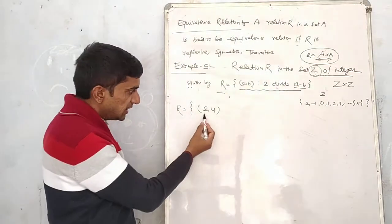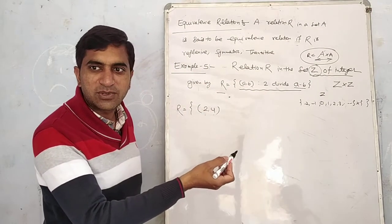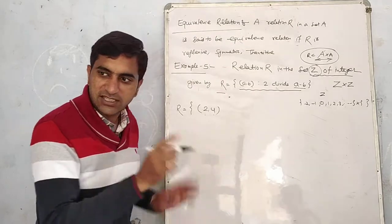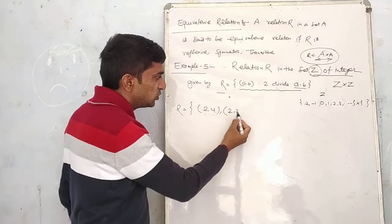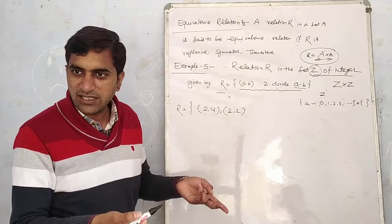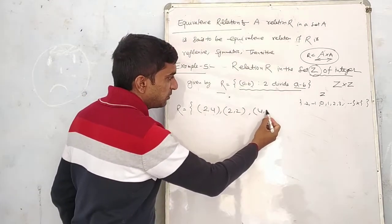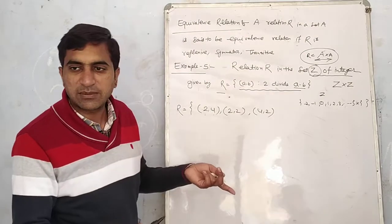If A is 2 and B is 4, then A minus B equals 2 minus 4. Is 2 minus 4 divisible by 2? Yes. Then 2 minus 2 is 0. Is 0 divisible by 2? Yes. Then I write here 4 minus 2. How much is it?